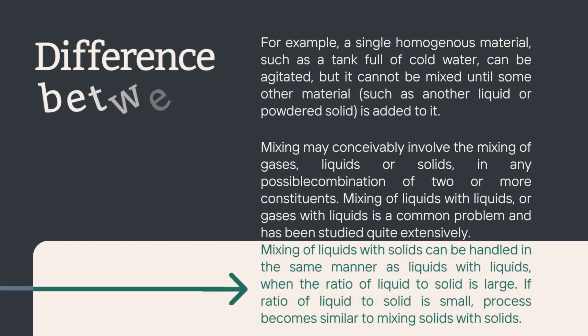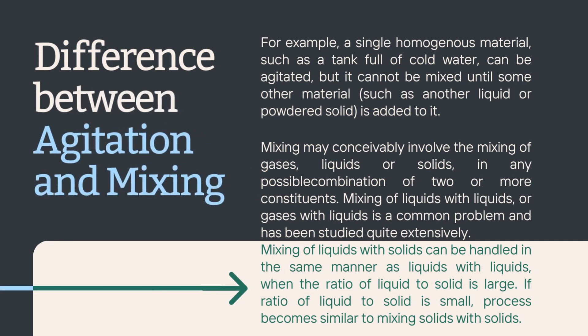So what is the difference between agitation and mixing? The key difference is that agitation involves moving a material around, while mixing involves combining different materials. For instance, if you have a tank of cold water, you can agitate it by creating motion within the water, but it won't mix until you add something else to it, like another liquid or powdered solid. Mixing can involve various combinations of gases, liquids, or solids — liquid with liquid, gas with liquid, or even solid with solid — depending on the specific process and materials involved.